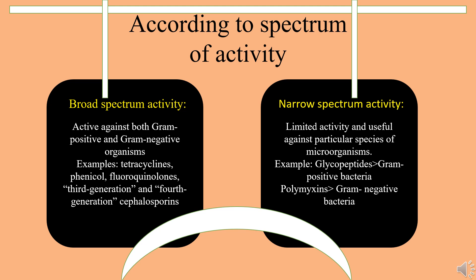Here are some examples of broad spectrum and narrow spectrum antibacterials. Tetracyclines, phenicols, fluoroquinolones, and third and fourth generation cephalosporins are broad spectrum antibacterials. Whereas glycopeptides are specific for gram-positive bacteria and polymyxins are for gram-negative bacteria.